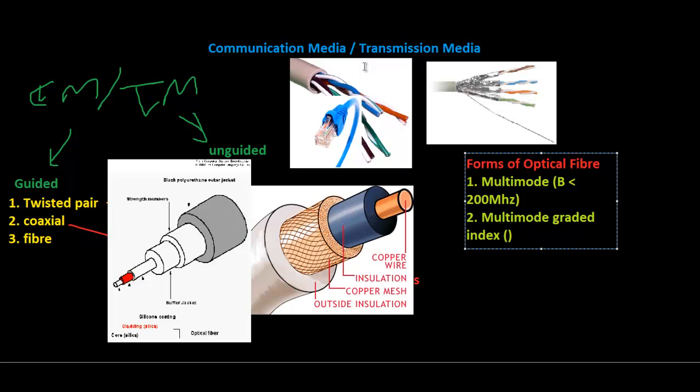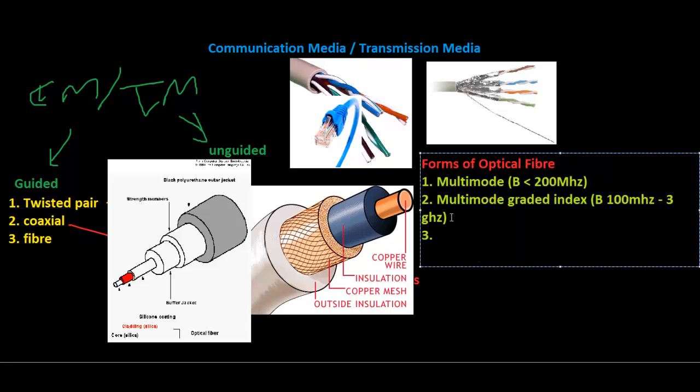The third mode is called single mode. Single mode normally supports the highest bandwidth because the diameter of the central core is reduced, only allowing one light signal to pass. This supports bandwidth up to 50 gigahertz per kilometer. The fourth mode is breakout cable.